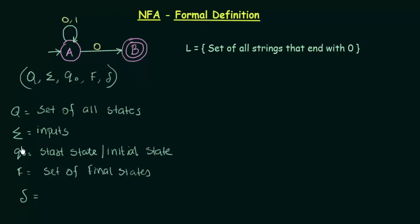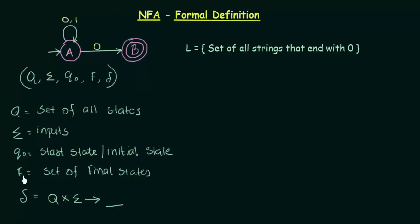So Q, Sigma, Q0, and F are the same as in DFA. What about Delta? Delta is a transition function that maps Q cross Sigma to something — we will try to find out what this transition function maps to. Q, Sigma, Q0, and F are the same as DFA, so let us just write down the values for this particular example.